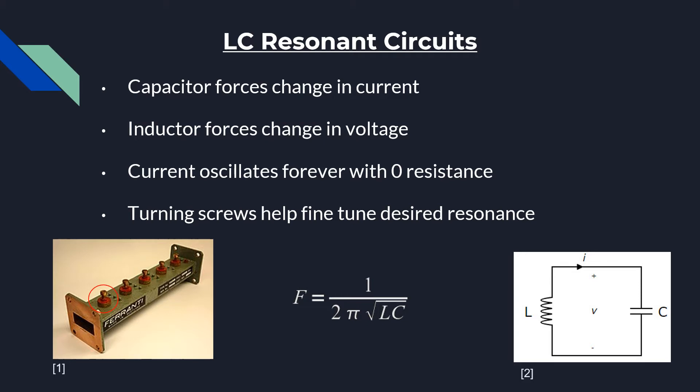This can also be described as: while the capacitor is discharging, the voltage difference between the two plates decreases and the inductor is trying to resist this change. This results in an oscillation of current at a frequency known as the resonant frequency, the equation for which is shown on screen. The resonant frequency can also be called a passband. At a resistance of zero, the current will oscillate forever as there is no energy loss.